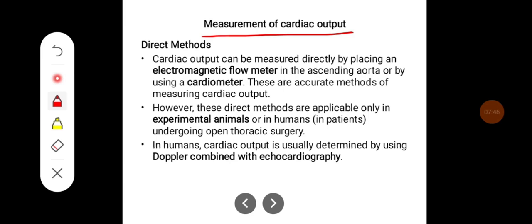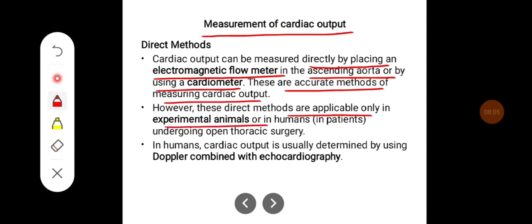Cardiac output can be measured by direct or indirect methods. Direct methods include placing an electromagnetic flow meter in the ascending aorta or using a cardiometer. These are accurate methods of measuring cardiac output. However, these direct methods are applicable only in experimental animals or in humans undergoing open thoracic surgery.